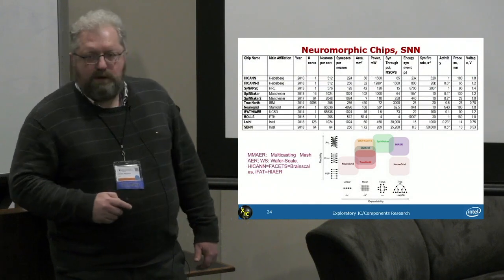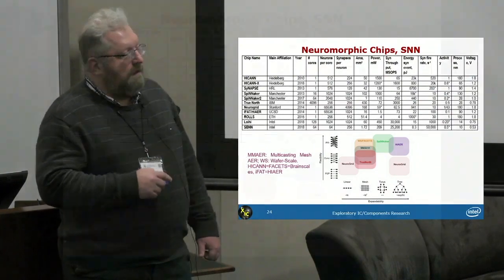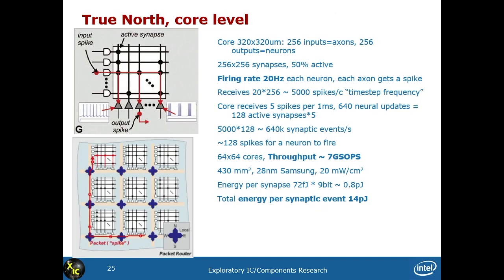A similar approach applies to neuromorphic chips implementing spiking neural networks. We went through the publications and, to the best of our ability, extracted the claimed energy per synapse, synaptic throughput, and power. An example is TrueNorth, which has multiple cores arranged on a grid. For each core, by reading the papers, we extract values of energy per synapse and throughput.